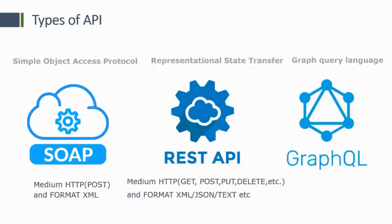Basically, we have three most used APIs: SOAP, REST API, and GraphQL. SOAP means Simple Object Access Protocol — that is the full form of SOAP. SOAP's limitation was that when you send data, it would only be one method — POST. You can only send data via POST. SOAP's limitation was that data could only be sent in the body, and the format of data sent or received was only XML format.